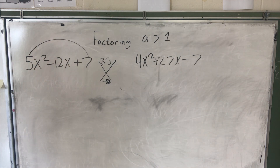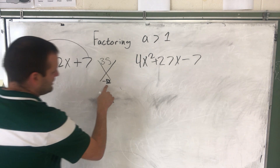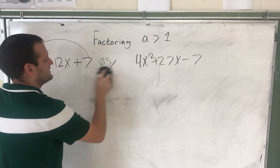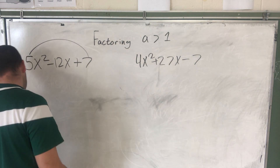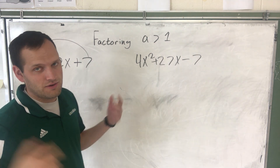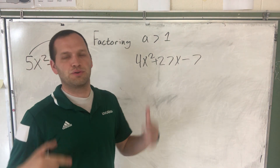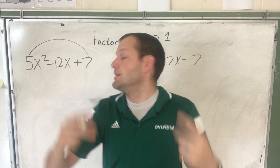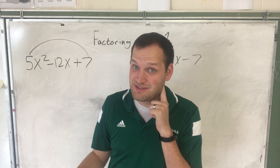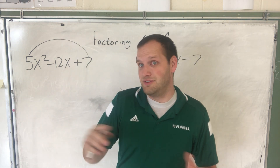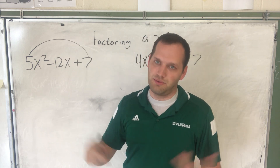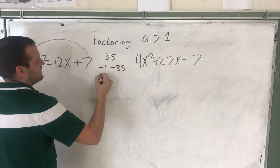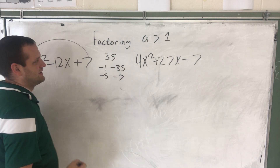Let's think of the numbers that multiply to be 35. We know there's going to be a negative in there somewhere. If the product is positive 35 and we need a negative sum, that means both numbers need to be negative — because a negative times a negative gives a positive. So: negative 1 and negative 35, or negative 5 and negative 7.